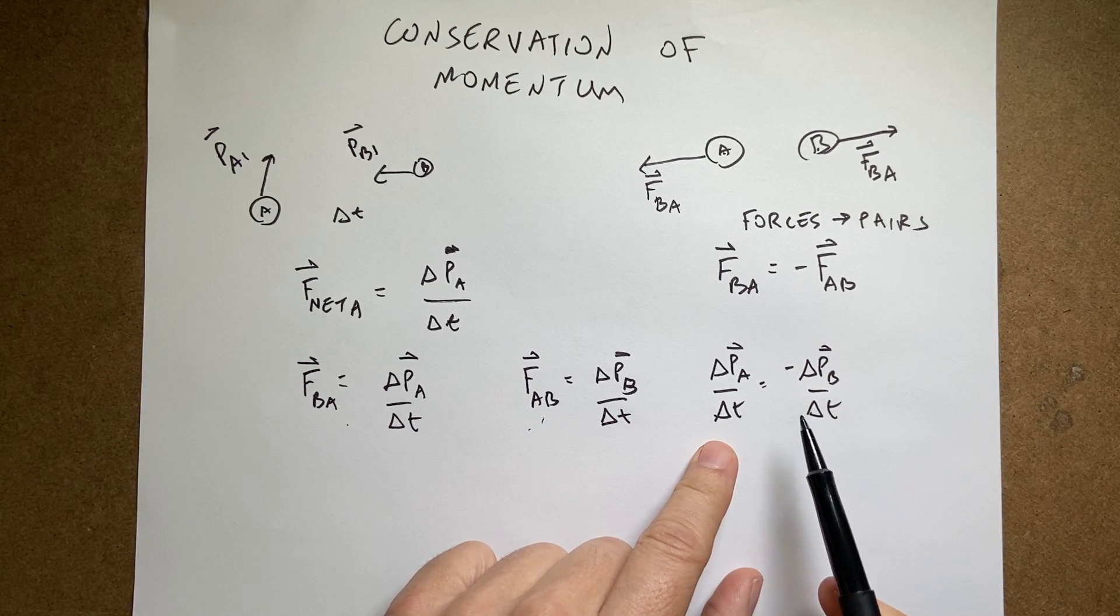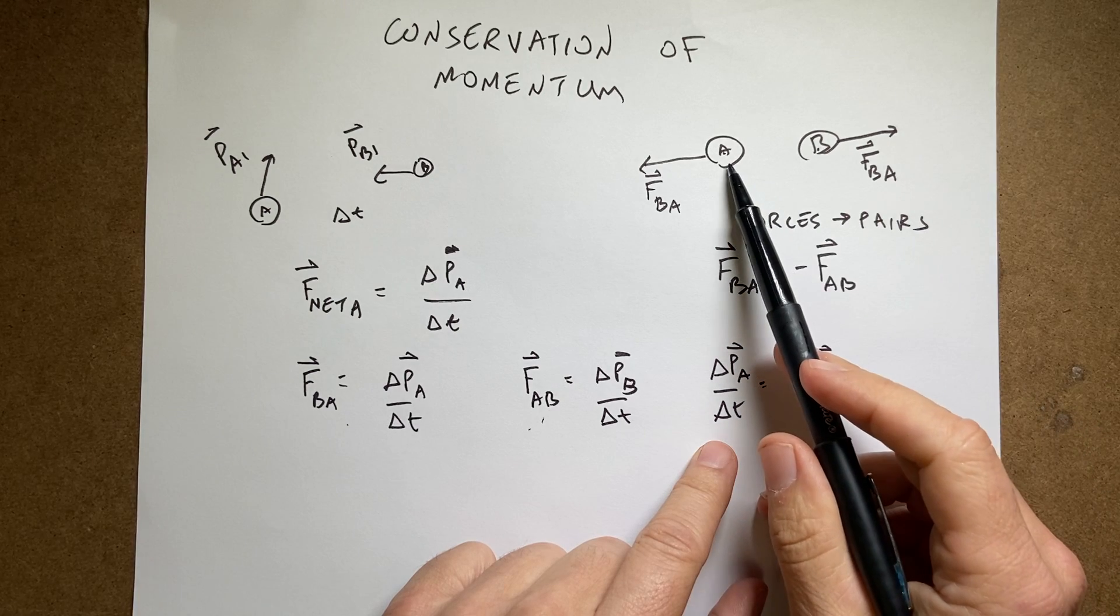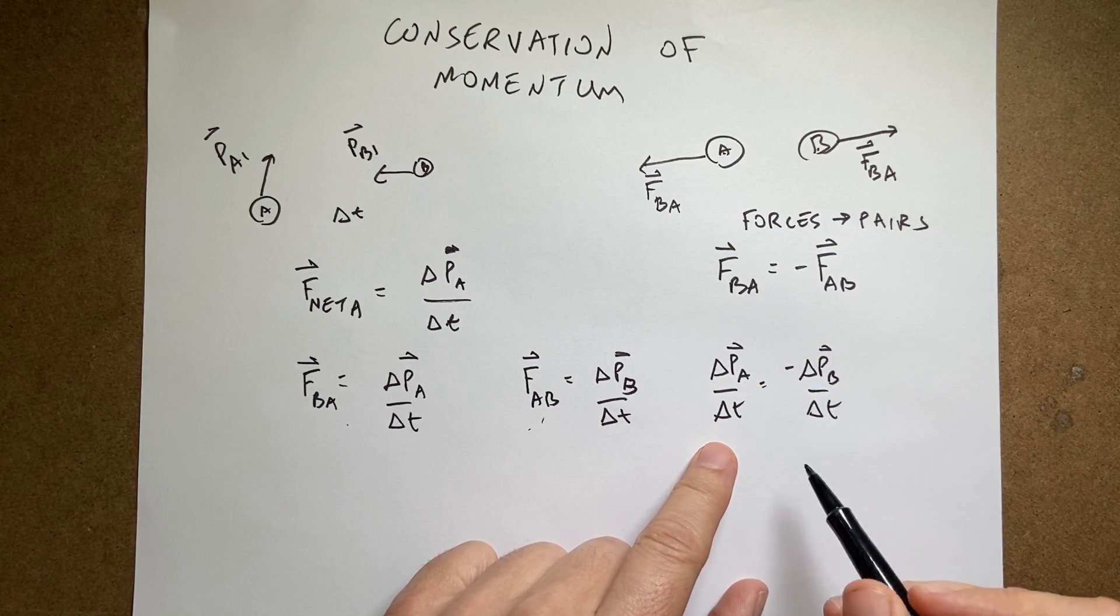Now, those are just forces. It's impossible for force B to push on A for a different time than A pushes on B. So, these two delta T's are the same and they cancel.